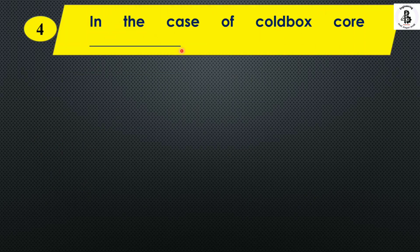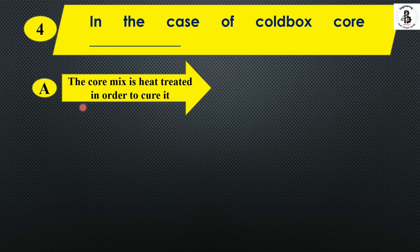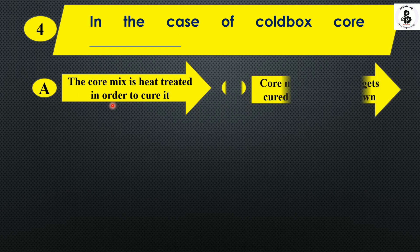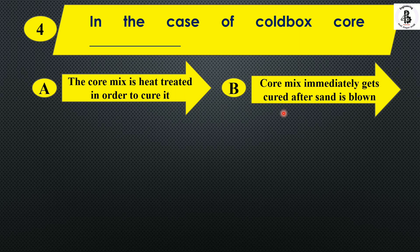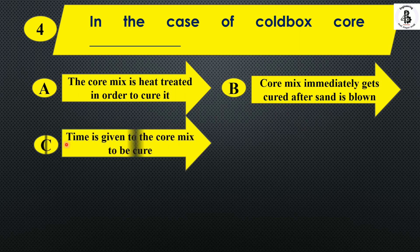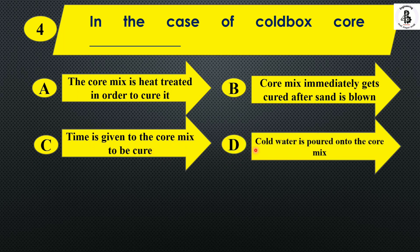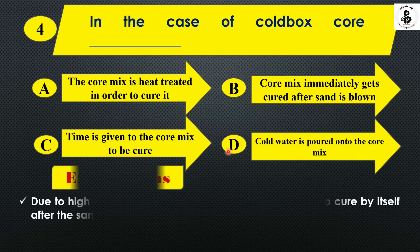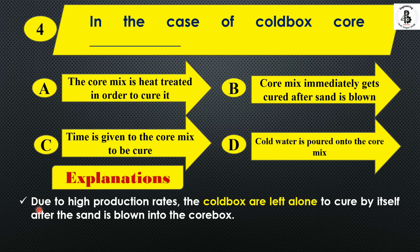Question 4: In the case of a cold box core — Option A: the core mix is heat treated to cure it. Option B: core mix immediately gets cured after sand is blown. Option C: time is given to the core mix to be cured. Option D: cold water is poured onto the core mix. Due to high production rates, cold box cores are left to cure by themselves after sand is blown into the core box. So the right answer is Option C — time is given to the core mix to be cured.